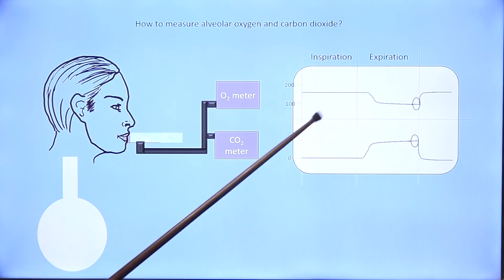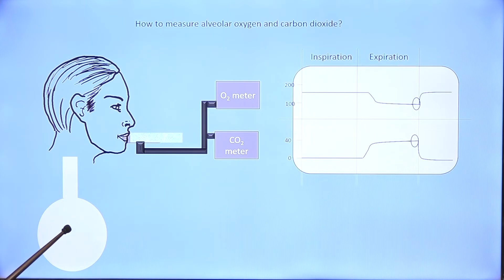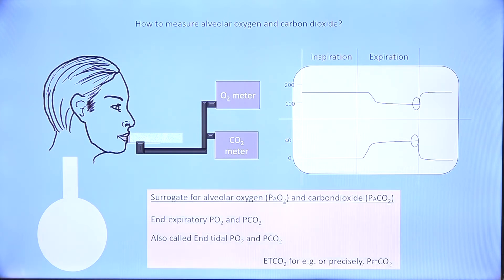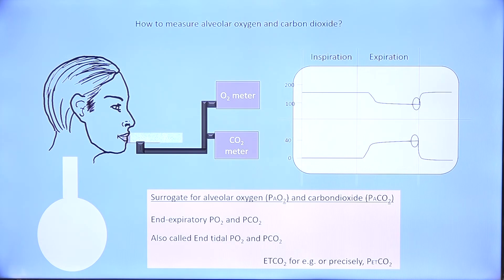In the last part of exhalation, the values both in the oxygen meter and the carbon dioxide meter will represent alveolar gas concentrations. That is the way in which we estimate alveolar oxygen and alveolar carbon dioxide — and note that it is totally a non-invasive procedure. It is called end-expiratory PO2 or end-tidal PO2, and end-tidal PCO2. EtCO2 is another term for end-tidal carbon dioxide, and this is a surrogate for alveolar carbon dioxide. That is the only way in which we can estimate alveolar gases.